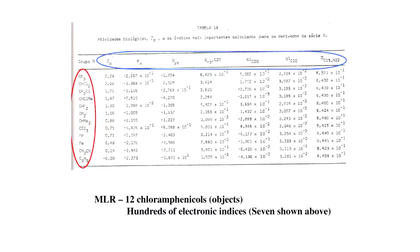We decided, more or less arbitrarily, to concentrate on seven electronic indices and use subsets to calculate biological activities. So we had a big problem: how to reduce the number of variables. I had only 12 objects and hundreds of variables.